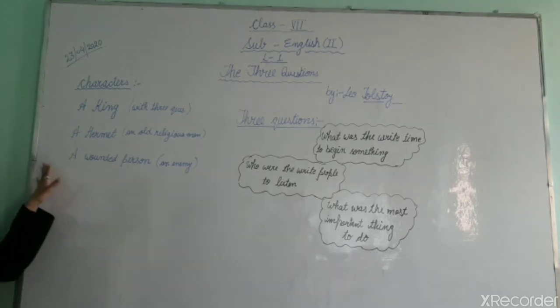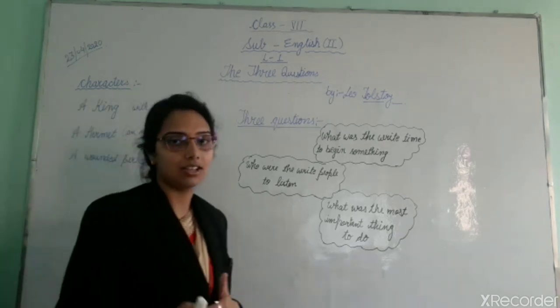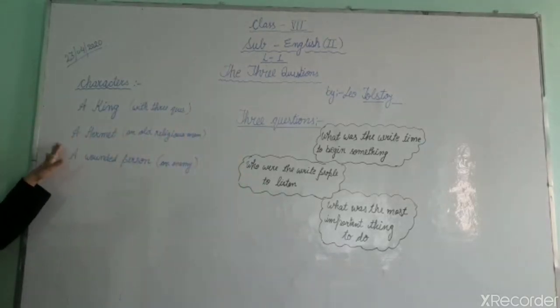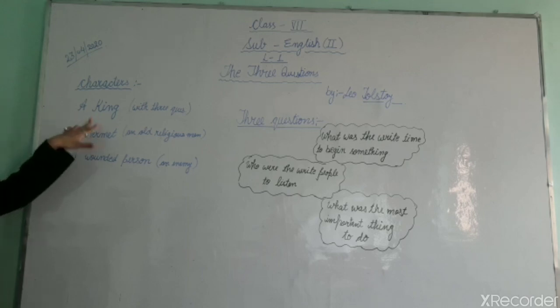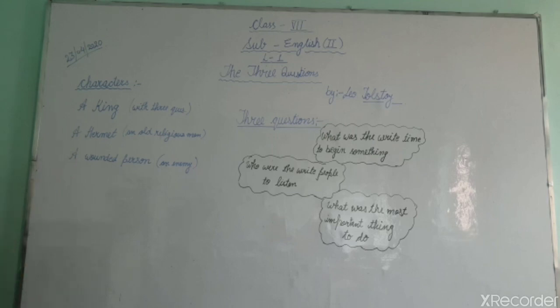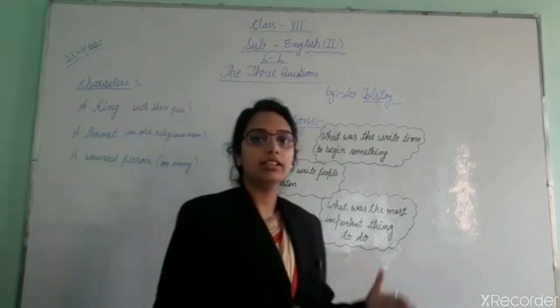Then the king again looked for the hermit. Before going, the king thought that at least once, he should again ask his questions to the hermit. The hermit was sowing seeds in the beds that had been dug the day before. The king asked again to answer his questions. Then what did the hermit reply? The hermit replied, you have already been answered. You have already been answered. Then he took the scene back and reminded the king what had happened the early day.